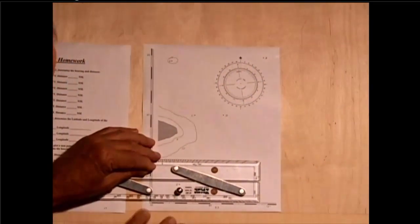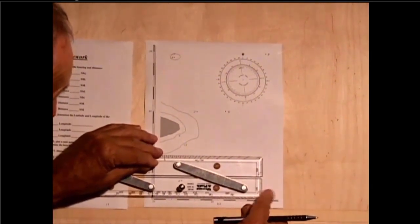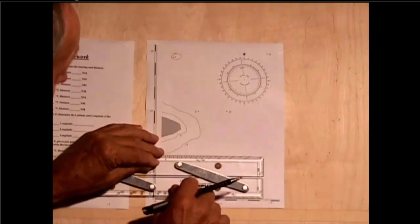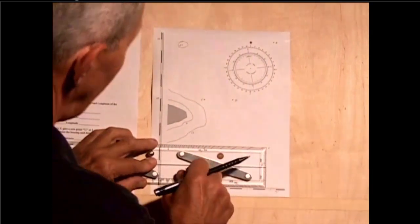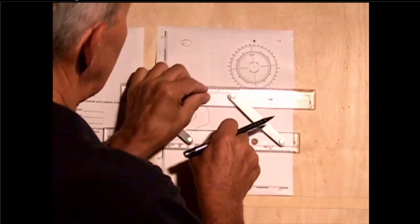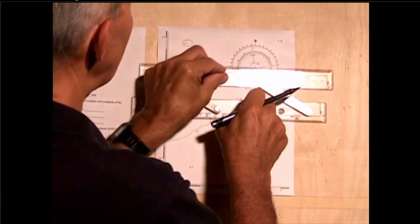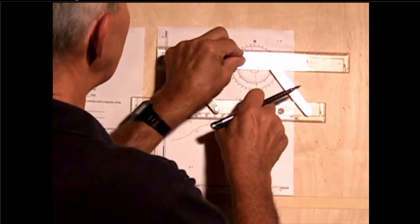I'm going to use my parallel rules, and first off, ensure that they're parallel to this bottom scale. The one that's not moving, you have to hold, press down very hard to ensure that it doesn't slip.